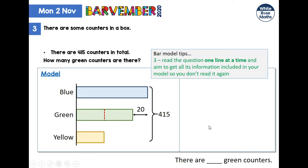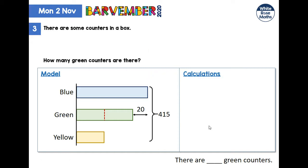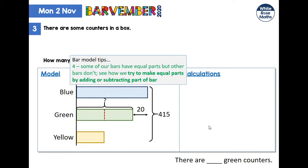Is all the information from line three included? Yes — let's get rid of it. We put in our question: how many green counters are there? Now we've talked about equal parts before, and we have a problem in that our green and yellow bars are made up of three equal parts, but our blue bar isn't. We're going to adjust our blue bar so that everything is made up of equal parts by getting rid of the small part of the bar that has 20 in it.